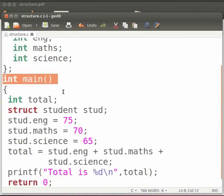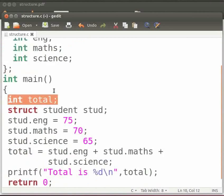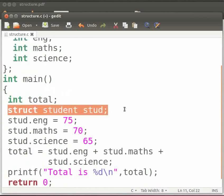This is our main function. Here we have declared an integer variable total. Now we have declared a structure variable stud. Stud is the variable of type student. It is used to access and modify the structure members.